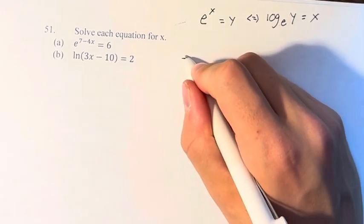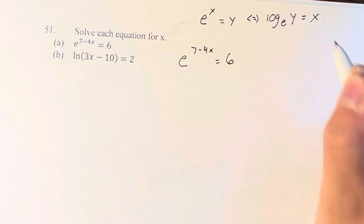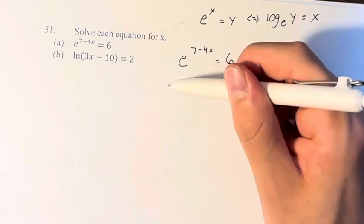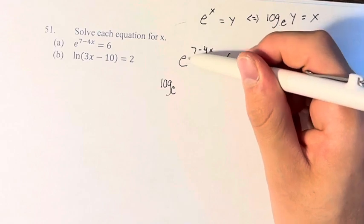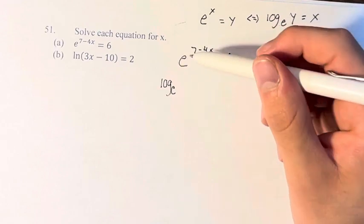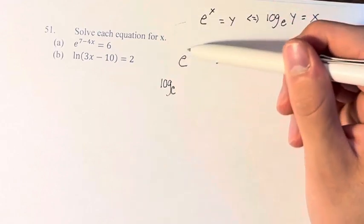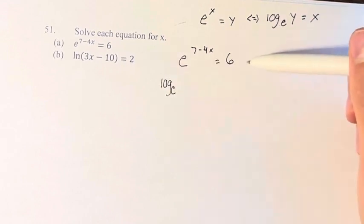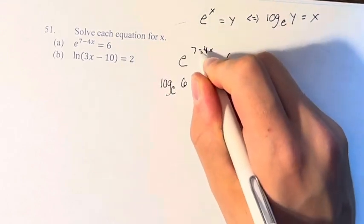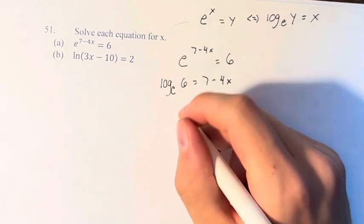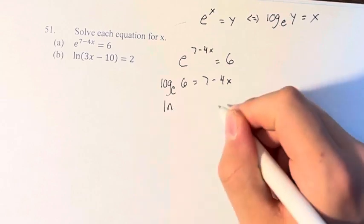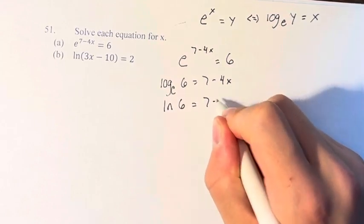Here, we have e to the 7 minus 4x equals 6. Therefore, we can take log base e. The base of the log and the base of the exponential function are the same. Log base e of the other side, 6, is equal to the exponent 7 minus 4x. Log base e is ln, the natural log of 6, equals 7 minus 4x.